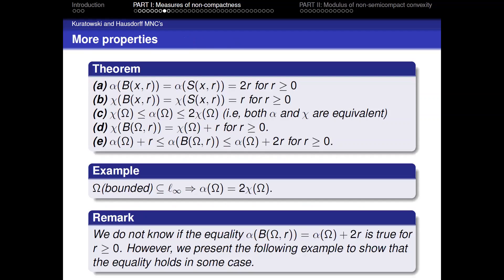There are more properties. For instance, the Kuratowski measure of non-compactness of the ball centered at x with radius r, or the sphere, is 2r, while for Hausdorff it is r. Furthermore, α and χ are equivalent via a standard inequality. Also, χ(B(Ω, r)) can be written as χ(Ω) + r.